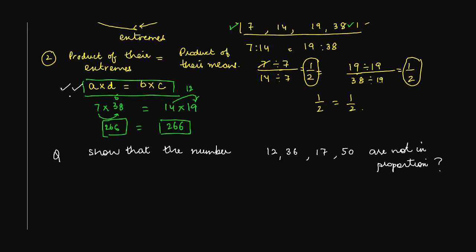Let's use this particular formula. If these numbers are in proportion, what will happen? The product of the extremes, what are the extremes a and d, if these numbers are proportional then a into d should be equal to b into c. We have b here and we have c here.